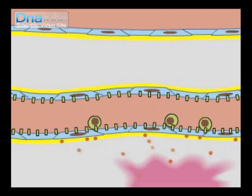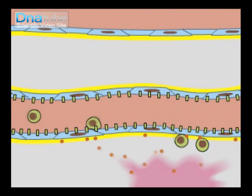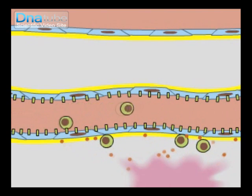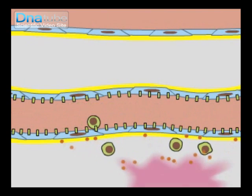There they adhere tightly and squeeze between endothelial cells without disrupting the vessel walls, then crawl out of the blood vessel into the adjacent connective tissue.